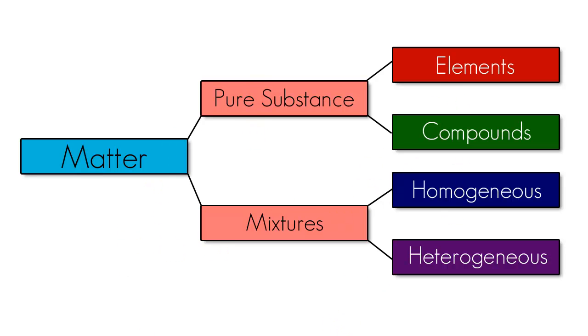Basically, you have two main types of matter: pure substances and mixtures. So matter can either be pure or a mixture of pure substances. We'll get into that later on. Now within pure substances, you have two subgroups, elements and compounds. So elements and compounds can be pure substances, and homogeneous and heterogeneous are mixtures.